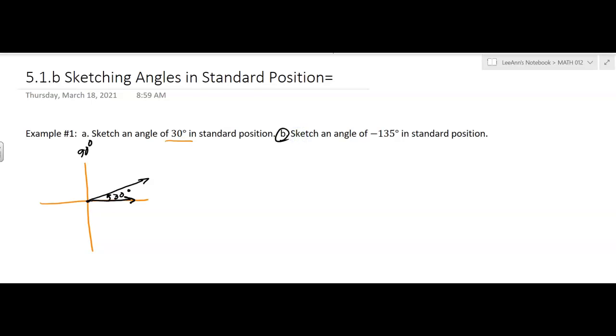So B. Now they want us to sketch an angle of negative 135. Okay, so here comes my quadrant system. And then what do I know? Well, it's negative, right? So I've got to go in this direction.